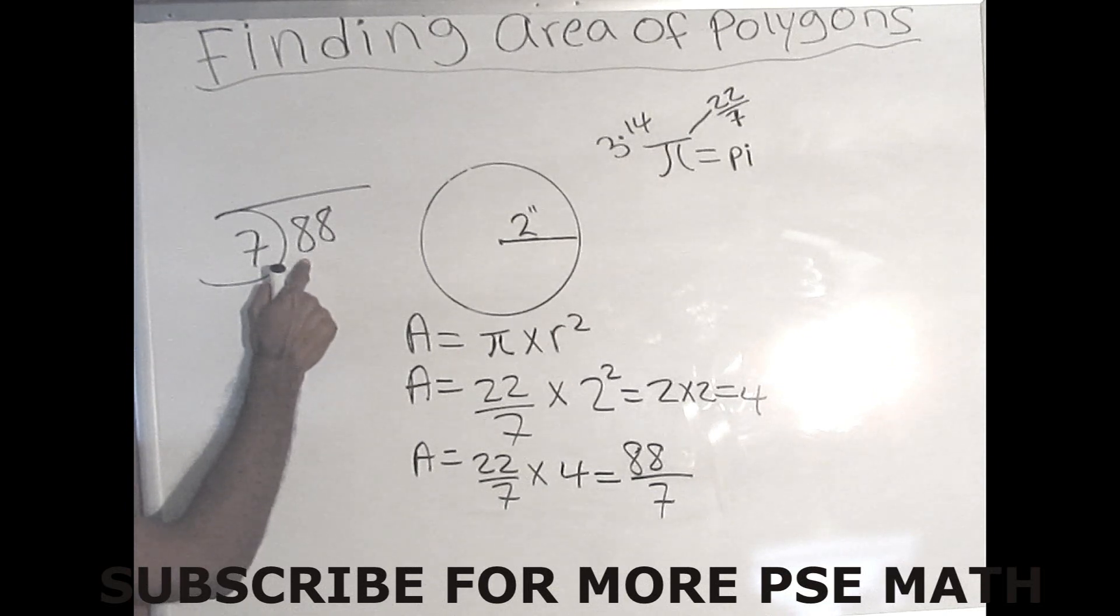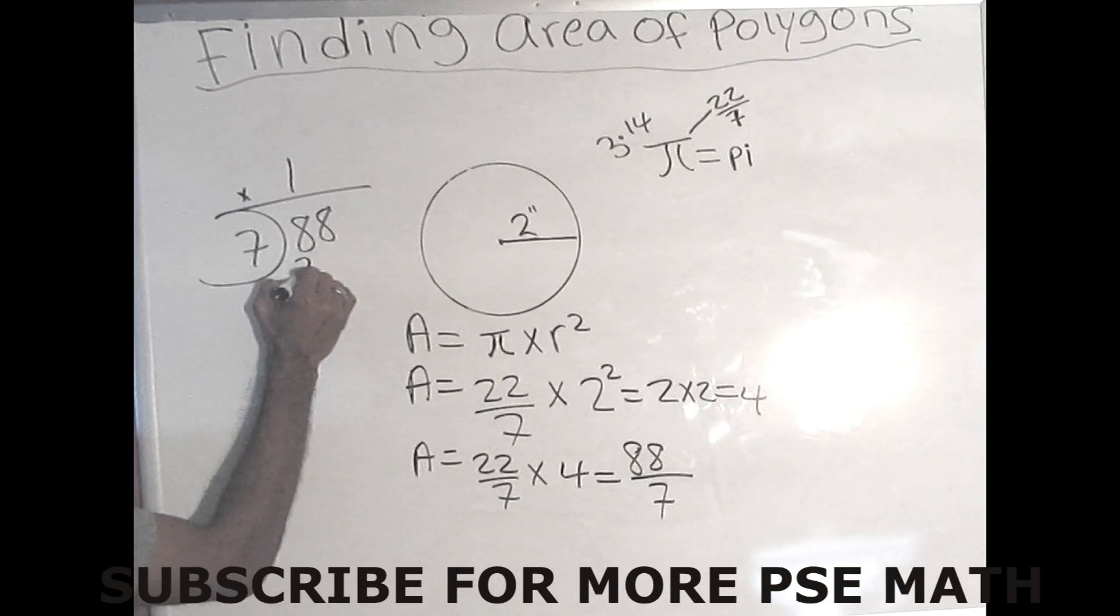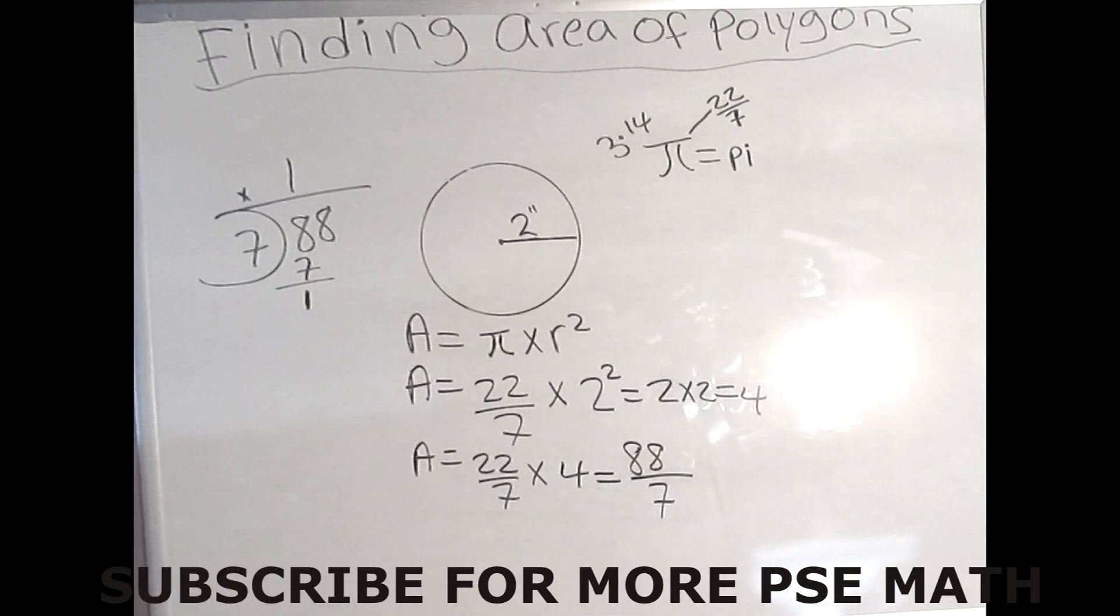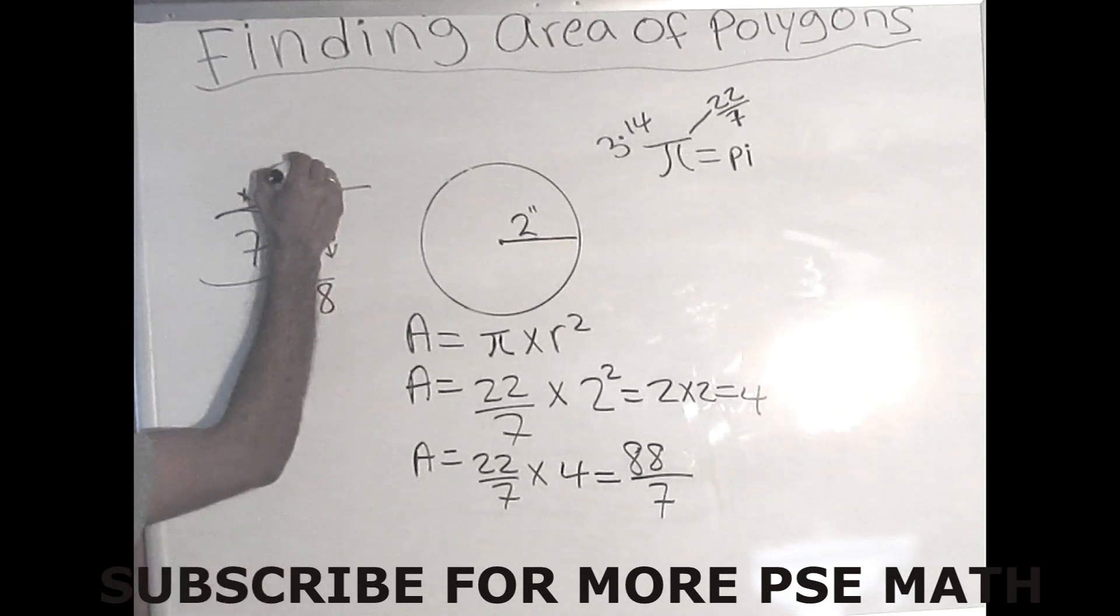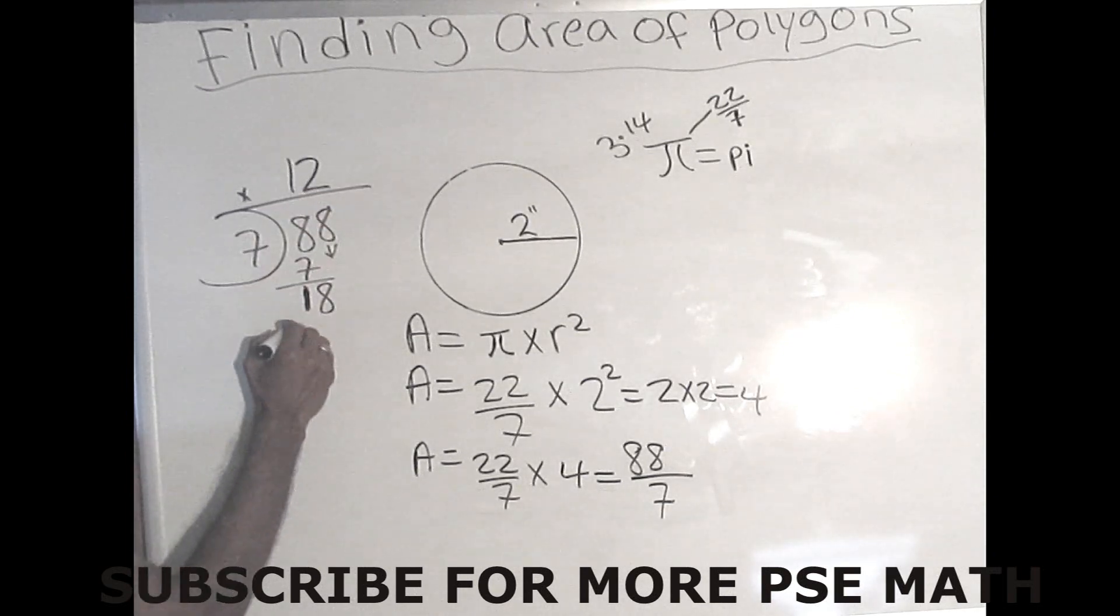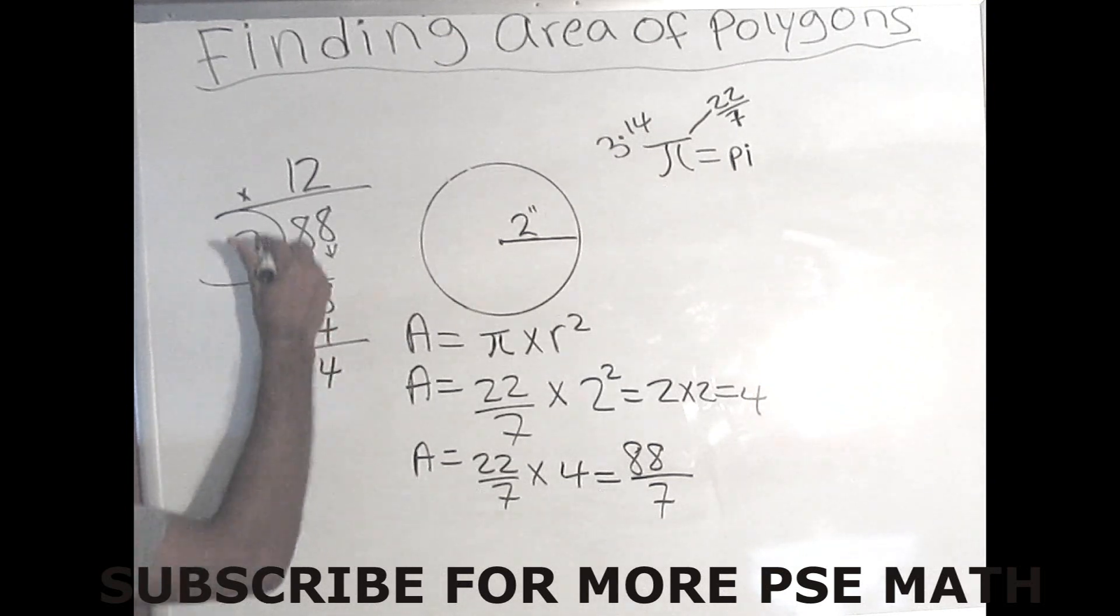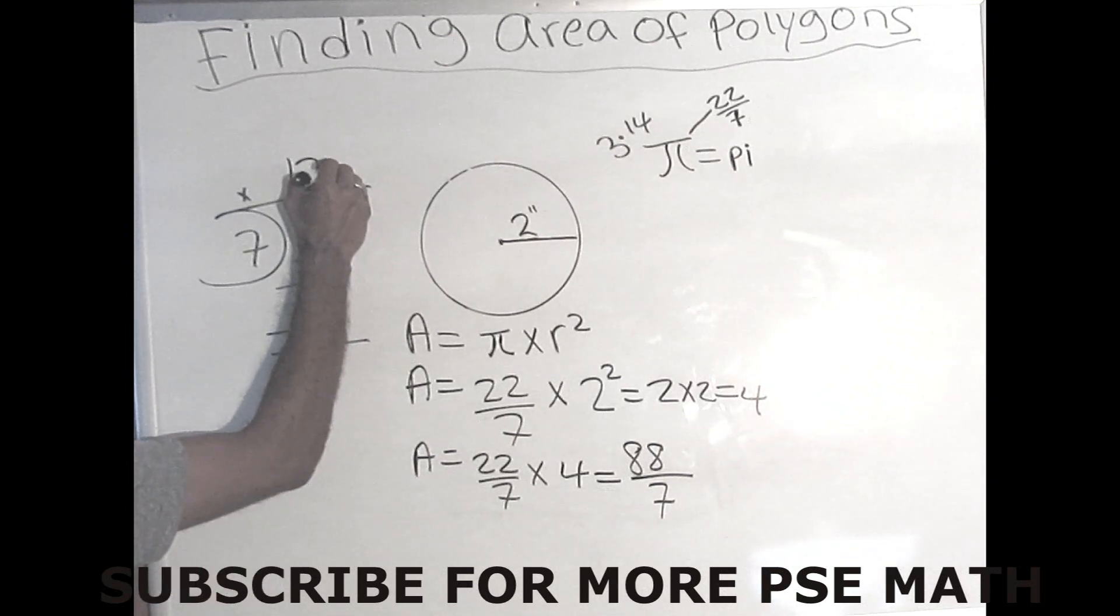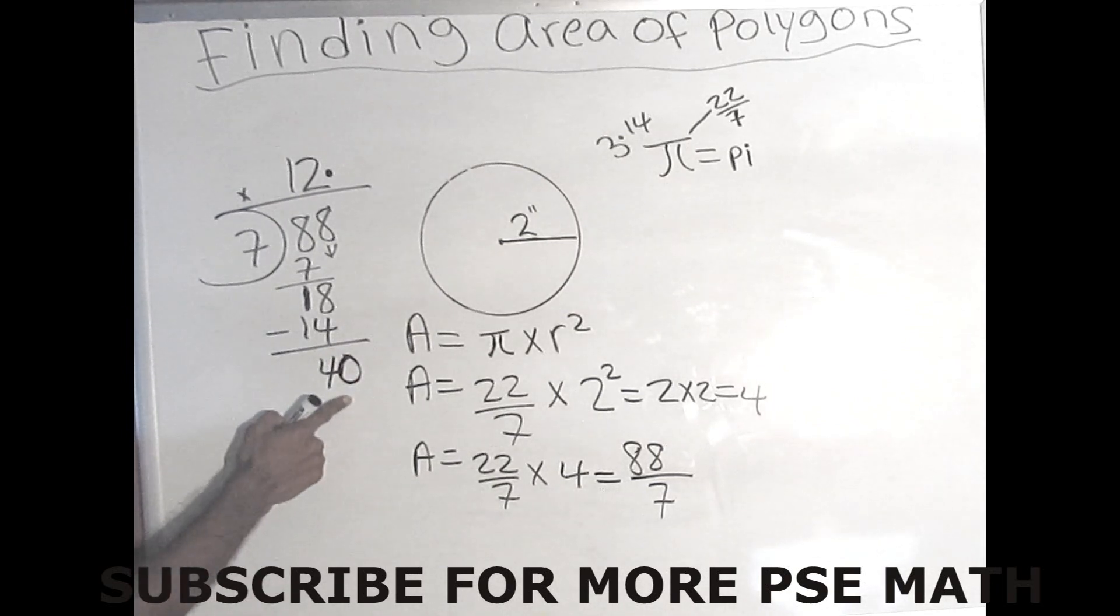So 7 could go into 8 one time. 1 times 7 is 7. When we minus you get 1. 7 cannot go into 1, so you bring down your 8. 7 could go into 18 two times, and 2 times 7 is 14. When you minus 18 from 14 you get 4. 7 cannot go into 4, and we use all our numbers. So the rule is you add your decimal. Then after adding your decimal, you'll place a 0 by the 4. So now you have 40.